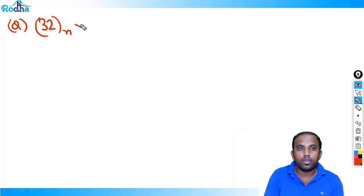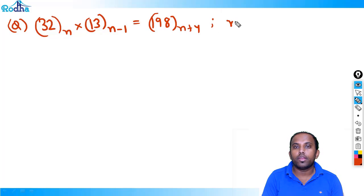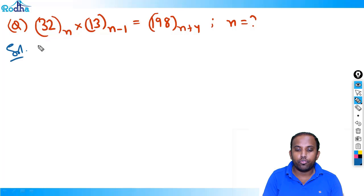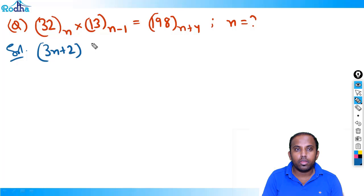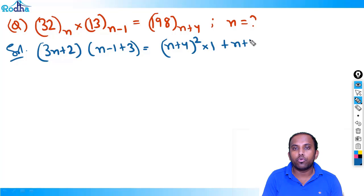Next question: 32 in base n multiplied by 13 in base n-1 equals 198 in base n+4. What is the value of n? Let's solve it. Converting: 32 in base n becomes 3n+2, and 13 in base n-1 becomes (n-1)+3 = n+2. The right side 198 in base n+4 becomes (n+4)²×1 + (n+4)×9 + 8.